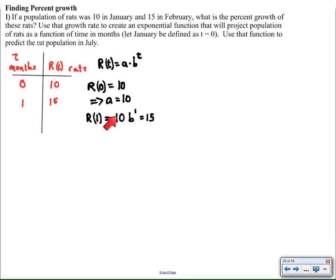So we have now, one month later, we have 10 rats times b, which I don't know, to the 1 power, that's where time goes, and that's equal to 15. So using algebra now, we can solve for the b value and get 1.5. That means there's a 50% monthly growth rate.